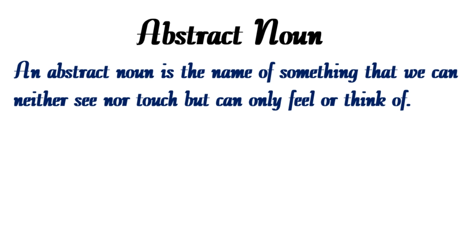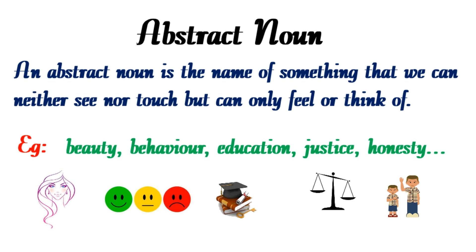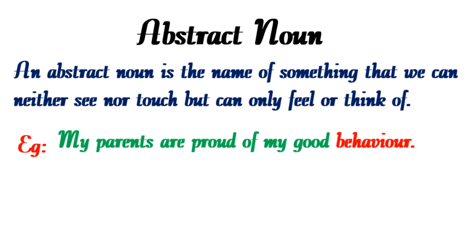An abstract noun is the name of something that we neither see nor touch but can only feel or think of. Examples include beauty, behavior, education, justice, and honesty. For example, 'My parents are proud of my good behavior' — here 'parents' is a common noun, while 'behavior' is an abstract noun, which we cannot see or touch.